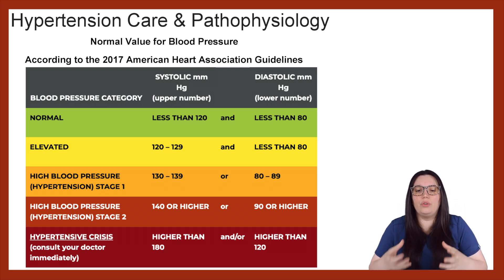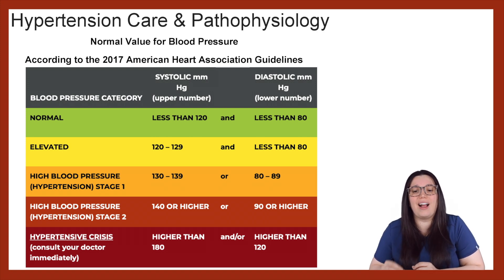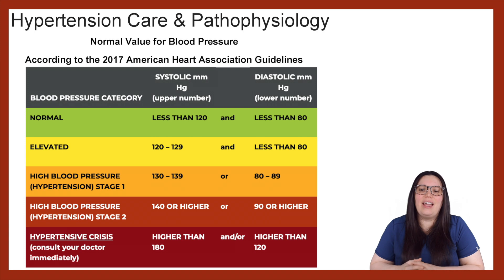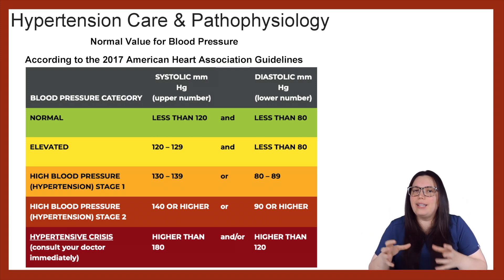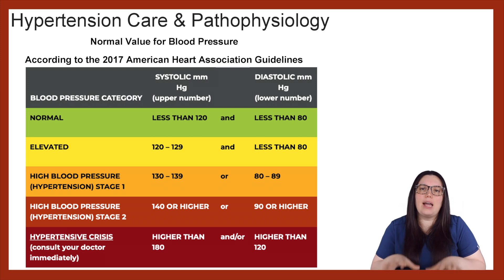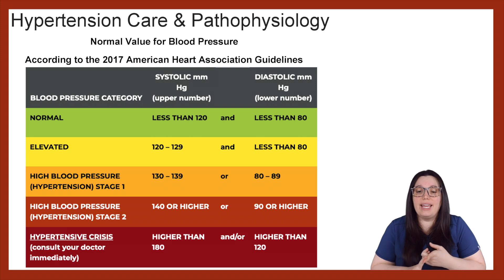When we're looking at hypertensive crisis, we're looking at a systolic blood pressure higher than 180 and a diastolic blood pressure greater than 120. Once hypertensive crisis hits, when it comes to nursing interventions, we're looking to evaluate brain and cardiac damage.